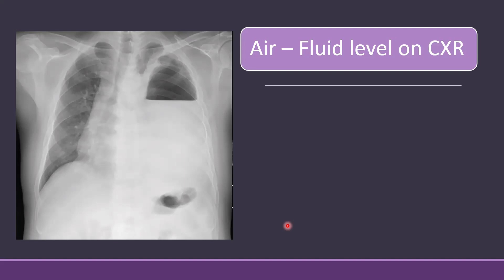So let's discuss what exactly is an air fluid level on a chest X-ray. If you look at this X-ray, you can clearly see that the abnormality is on the left side. If you concentrate on that abnormality, you can see that there is a straight line, and on top of that straight line you can see a black area.